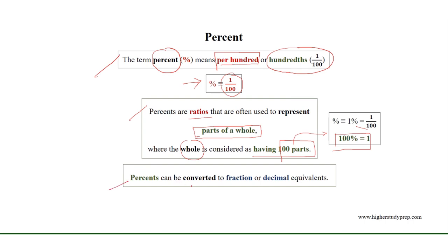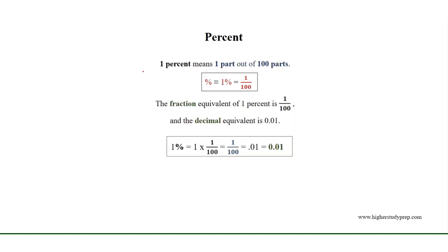Percents can be converted to fraction or decimal equivalents. 1% means 1 part out of 100 parts. The fraction equivalent of 1% is 1 over 100 — that is hundredths — and the decimal equivalent is 0.01.